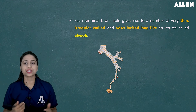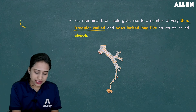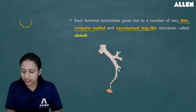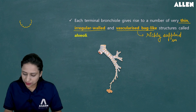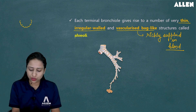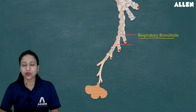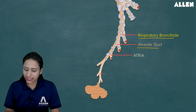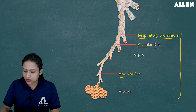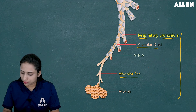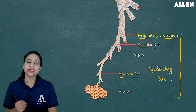Terminal bronchioles give rise to very thin, irregular-walled, vascularized bag-like structures — richly supplied with blood — called alveoli. Terminal bronchioles open into respiratory bronchioles. Respiratory bronchioles open into alveolar ducts, then to atria, then to alveolar sacs, and finally to alveoli. The path from respiratory bronchioles to alveoli is known as the respiratory tree, because it is involved in the exchange of gases.